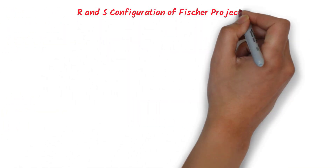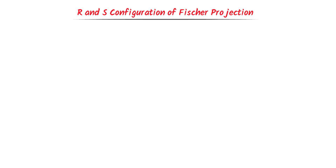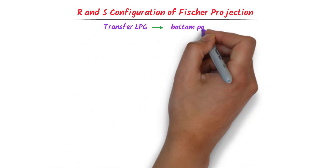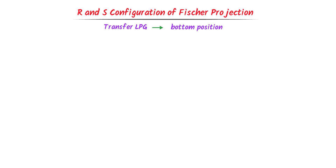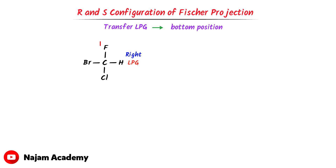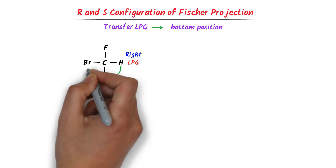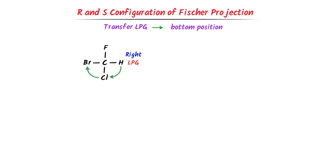Now we will learn R and S configuration of Fischer projection structures. Remember that we always transfer LPG to the bottom position in Fischer projection. Consider this organic compound. We can see that LPG is present at the right-hand side. In such cases, I do not rotate the top group — I only rotate the remaining three groups in the clockwise direction. I transfer hydrogen to the position of chlorine, chlorine to the position of bromine, and bromine to the position of hydrogen. Now I write fluorine, hydrogen, chlorine, and bromine.